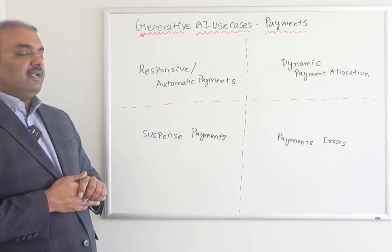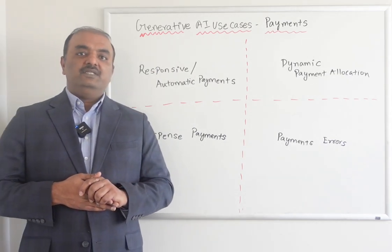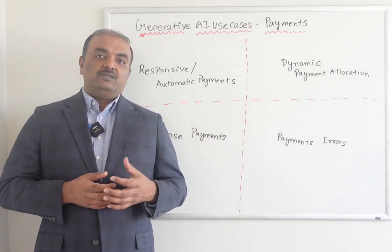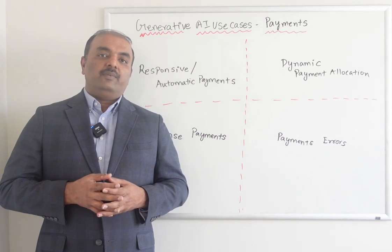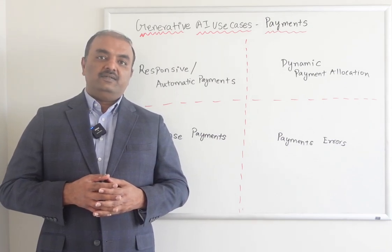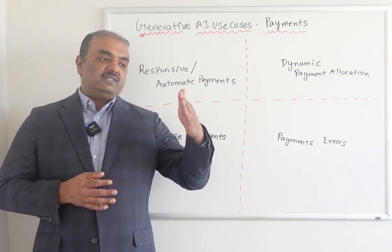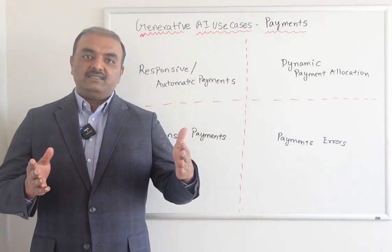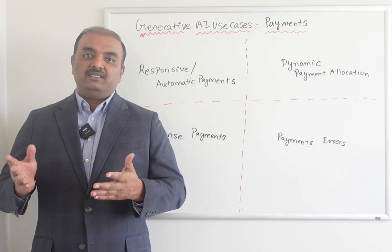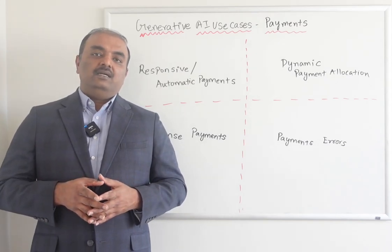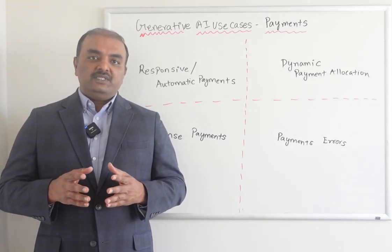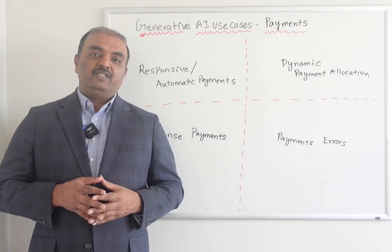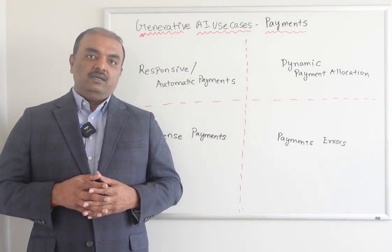The second use case is payment allocation, which means when you get a payment — say $1,000 — the payment allocation plan will say: first apply to premium, then taxes and surcharges, etc. And it is static, which means for all customers, payments will be applied based on the same payment allocation plan.